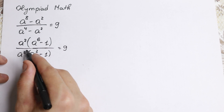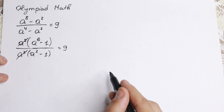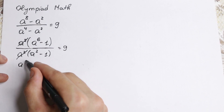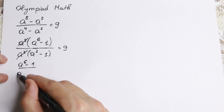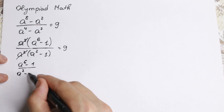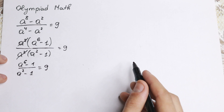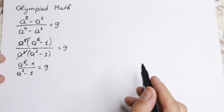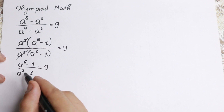Right now we can easily cancel. We have a product, so we can cancel the a squared from numerator and denominator. What we have right now is a to the sixth minus 1 over a squared minus 1, equal to 9. How can we simplify this further? Let's cross multiply this equation, because we cannot simplify more in this form.